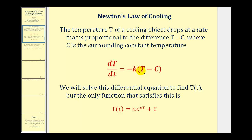Where T is the temperature of the cooling object and C is the temperature of the surrounding environment. We will solve this differential equation to find T of t. The only function that satisfies this differential equation, or the general solution, would be T of t equals A times e raised to the power of Kt plus C. And we'll discover this in our first example.